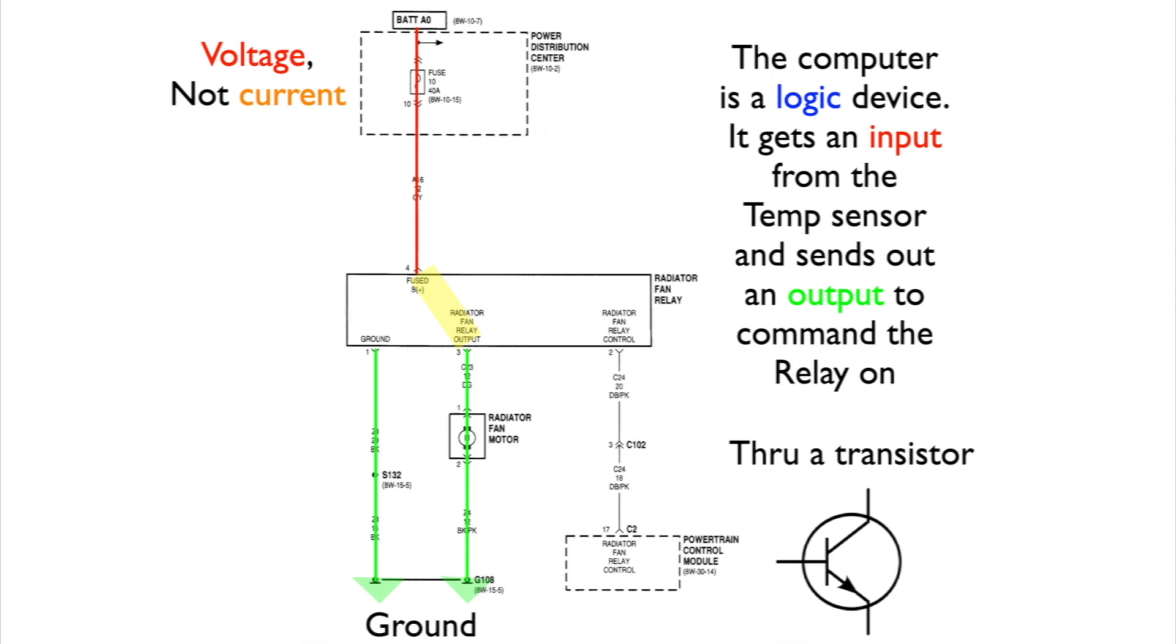Now this all happens through a transistor. A transistor is a semiconductor device used to switch electronic signals on. Here's where the transistor lives.